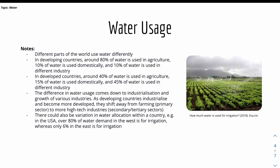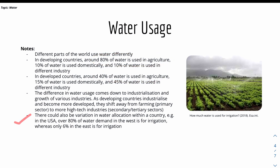The difference in water usage between developing and developed countries comes down to industrialization. As developing countries industrialize and become more developed, they shift away from farming — the primary sector — to more high-tech industries in the secondary and tertiary sectors. That's why agricultural water usage decreases. There can also be variation within a country; for example, in the USA, over 80% of water demand in the west is for irrigation, whereas in the east it's only 6%, due to geography and the amount of land available.